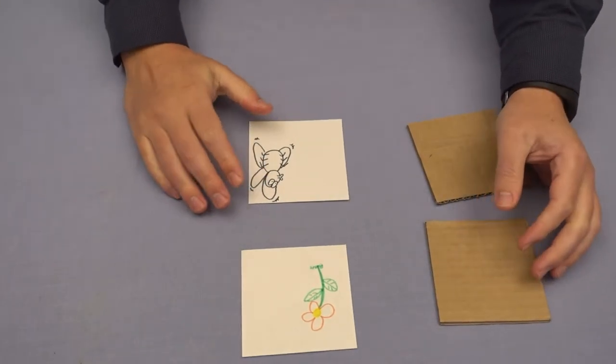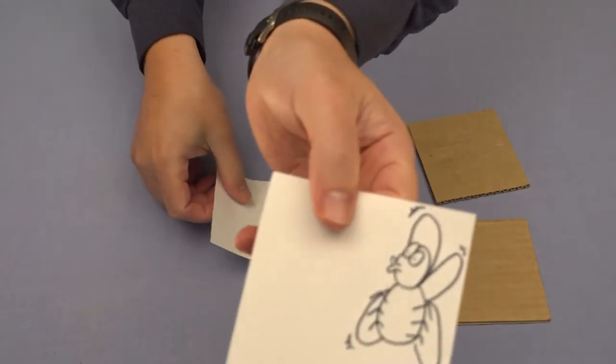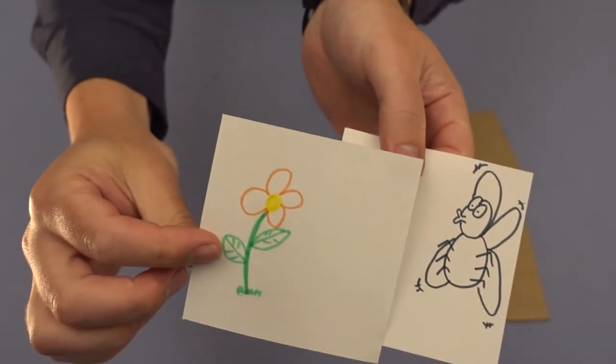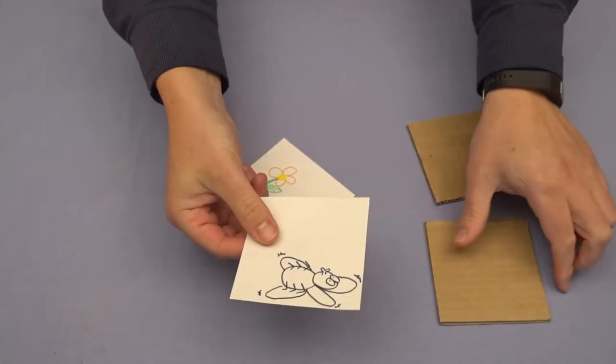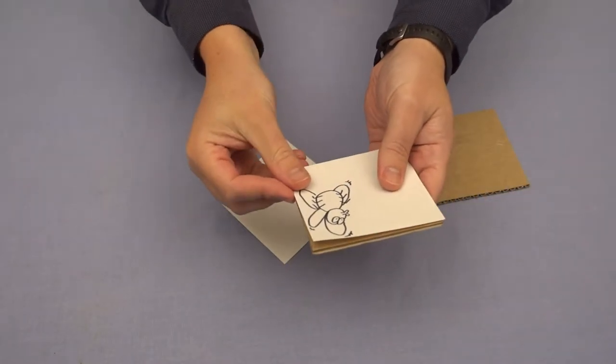Now that I've got my two pictures drawn, I've got a little bug on this one. It's going to be flying across to check out the flower on this one. We need to stick those to our pieces of cardboard using some tape.